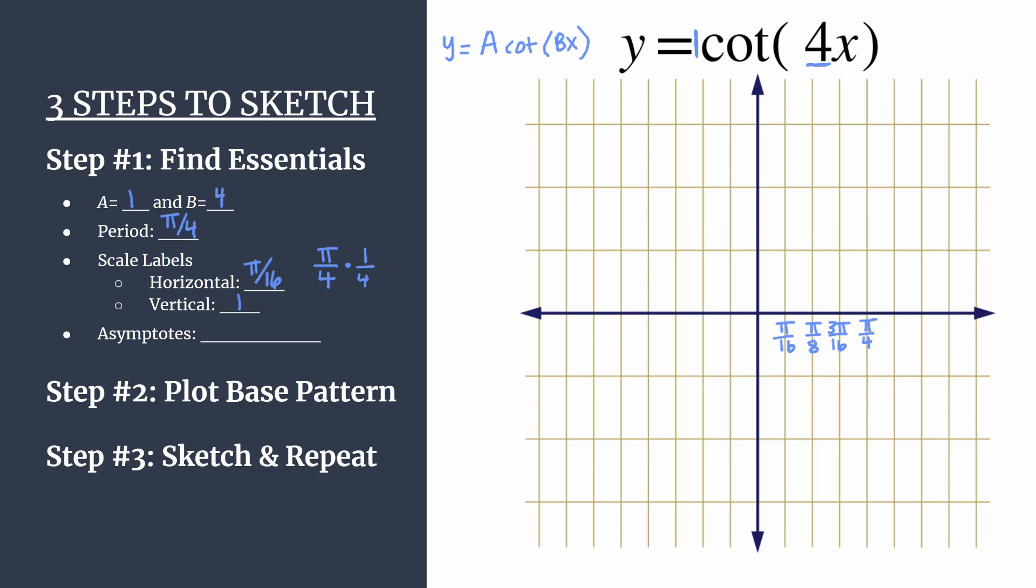Let's keep counting. We have five pi over 16, six pi over 16 reduces to three pi over eight, seven pi over 16, and eight pi over 16 reduces to pi over two. So if you're working along with me, let's pause. Get the negative part of this axis labeled. It's all the same just with negative signs. And then we'll come back for the vertical axis.